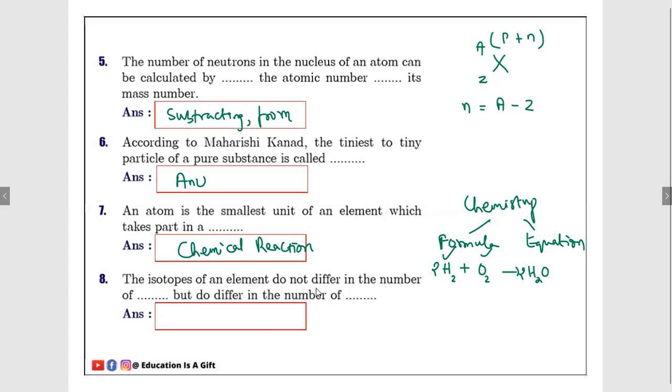Number eight: The isotopes of an element do not differ in the number of dash but do differ in the number of... What is meant by isotopes? Isotopes means elements of same atoms. For example, hydrogen, hydrogen, hydrogen, or oxygen, oxygen, oxygen. Elements of the same atom will have same atomic numbers. If you take hydrogen, it is 1, 1, 1. If you take oxygen, it will be 8, 8, 8.